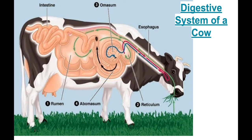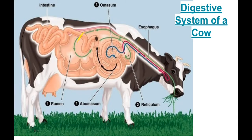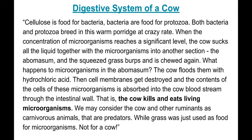A cow has a very large stomach with four chambers. The most important chamber is the rumen, where grass is collected. The rumen is populated by bacteria, and the bacteria consume the grass and convert it to energy, growing on it. The cellulose from grass is food for bacteria, and the bacteria are also food for protozoa — small microorganisms that prey on bacteria.